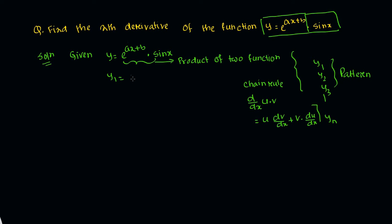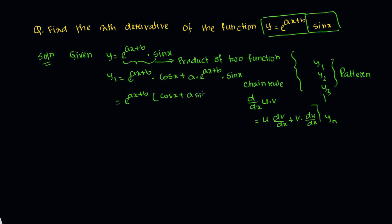So y1: e to the power ax plus b is the first function, sin x is the second. Applying the product rule gives us: e to the power ax plus b into cos x, plus sin x into a·e to the power ax plus b. Taking e to the power ax plus b as common, we get: e^(ax+b) · (cos x + a·sin x).